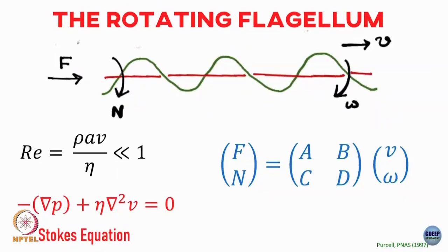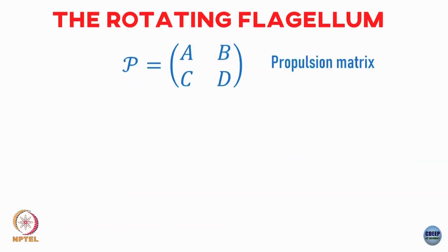This is what Purcell did. He said: let me write my forces and torques in terms of this matrix [a, b; c, d], and they relate my velocities and angular velocities to the forces and torques. This is what Purcell called the propulsion matrix for a bacterium.